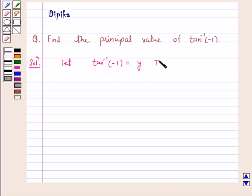Then tan y is equal to minus 1 and this is equal to minus tan pi by 4.